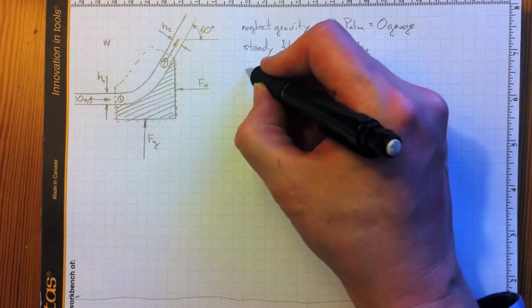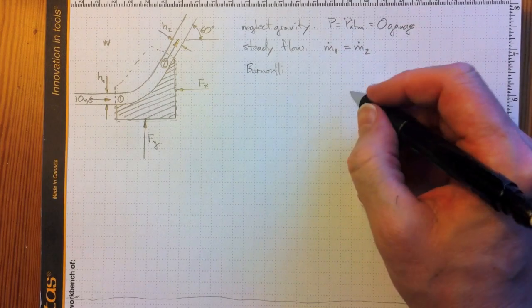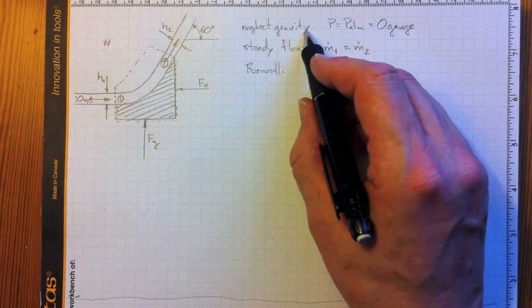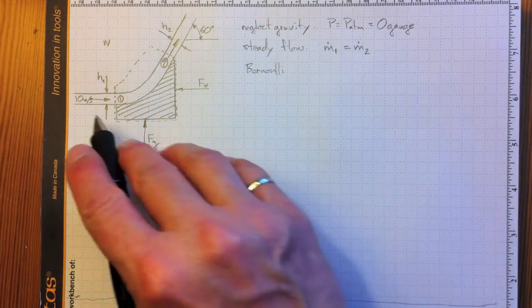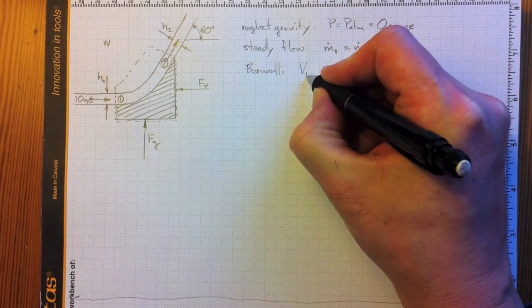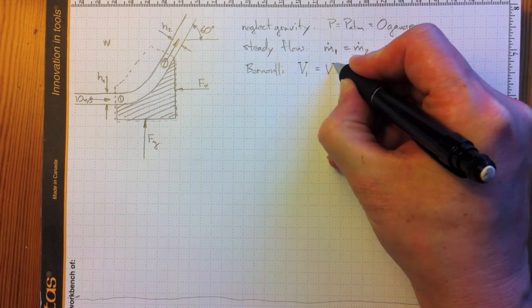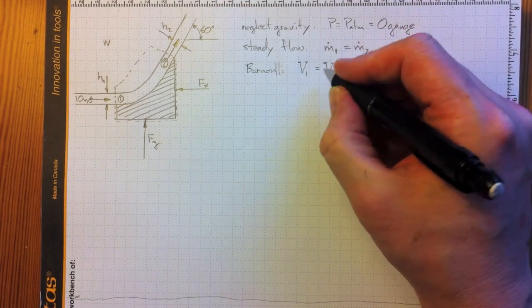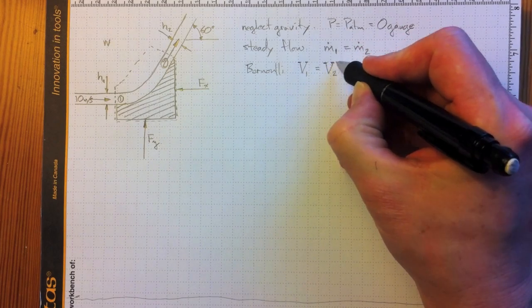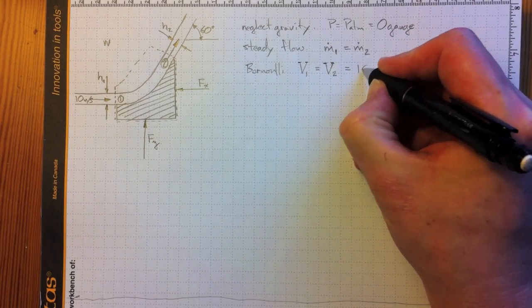Likewise, Bernoulli's equation applies. And from Bernoulli's equation, the pressures are all atmospheric, so there's no pressure term. We're neglecting gravity, so there's no elevation term. We wind up with the velocity at 1 and the velocity at 2 being the same. So V1, capital V1, equals capital V2. I'm making an emphasis on the capital because that's the total velocity, not the lowercase v that we use for a y velocity component.